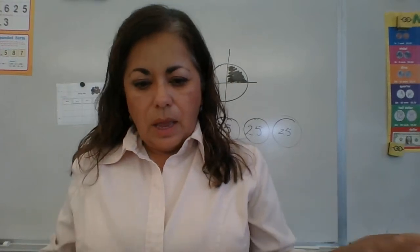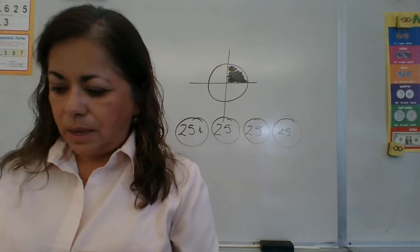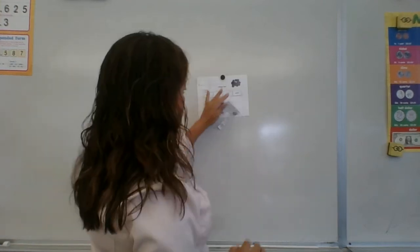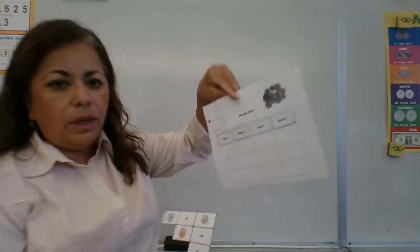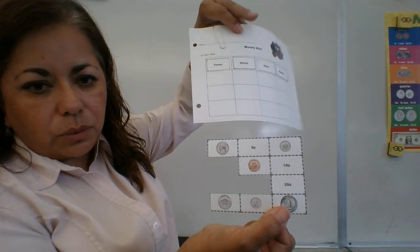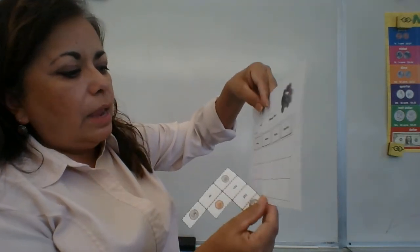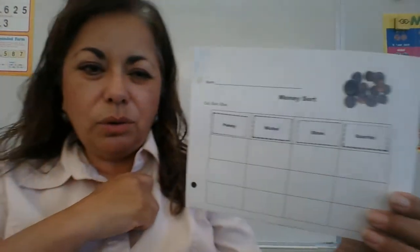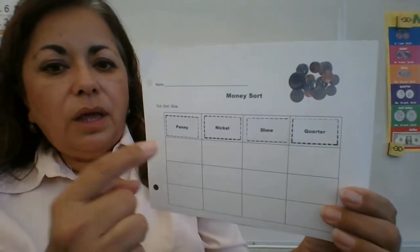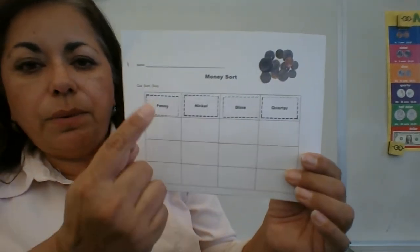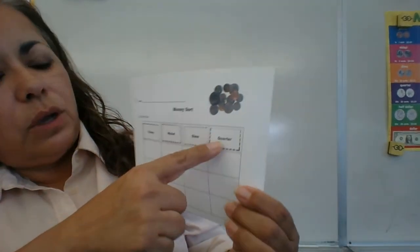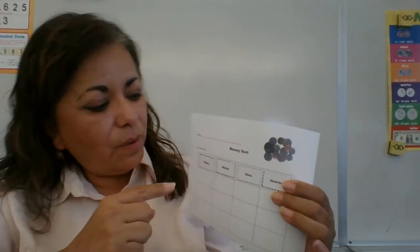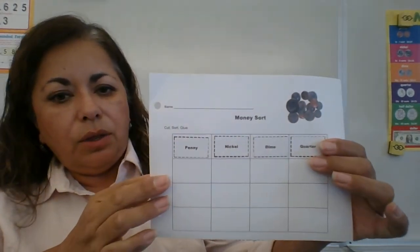The last thing I gave you is a paper with coins on the bottom. You're going to cut out those coins. You'll need scissors and a glue stick — try not to use liquid glue, but if that's all you have, that's fine. Cut out the names of the coins and put them across the top: pennies, nickels, dimes, and quarters. The order doesn't matter, but I like to put them smallest to biggest — penny, nickel, dime, quarter. Glue those on.